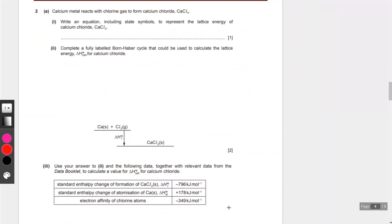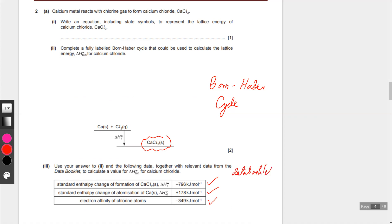Try solving this question and send me a picture of the working - send me the answer. Calcium chloride comes first. You have to construct a Born-Haber cycle. The things provided to you are the enthalpy of formation, the enthalpy of atomization of calcium, and the electron affinity of chlorine. From the data booklet you would need the first plus second ionization energy of calcium, and you might also need the chlorine bond enthalpy because you may want to break that.